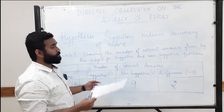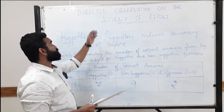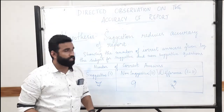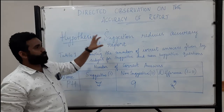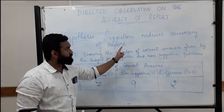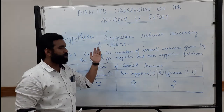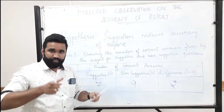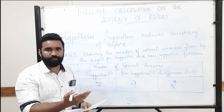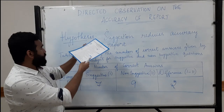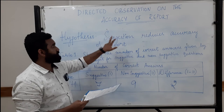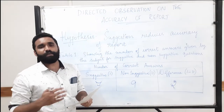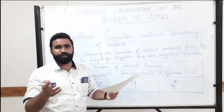Students, today we'll be learning about the scoring and analysis of the experiment on directed observation and accuracy of report. The hypothesis of this particular experiment states that suggestion reduces accuracy of report. A hypothesis is a tentative, temporary statement that we are trying to test. So the hypothesis here clearly states: suggestion will reduce the accuracy of report.